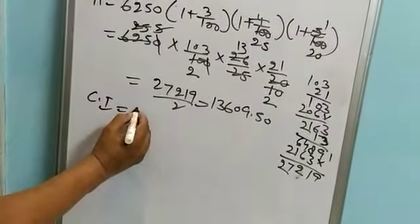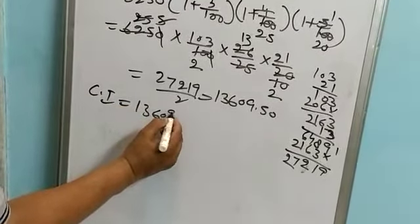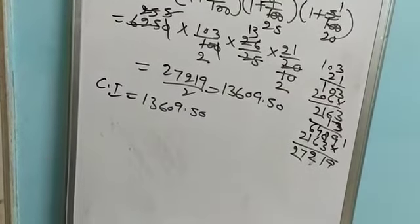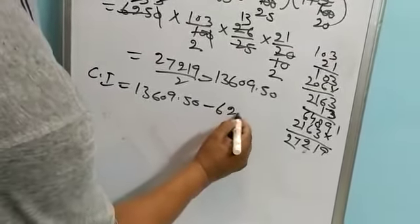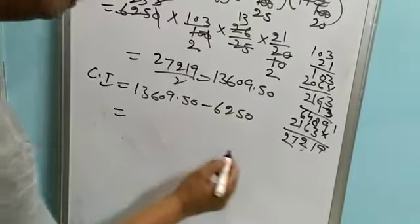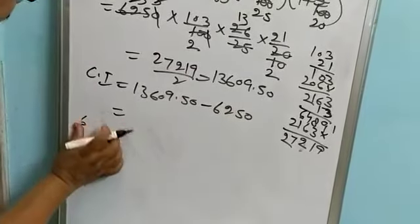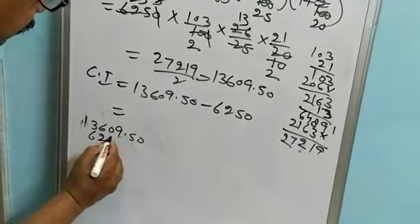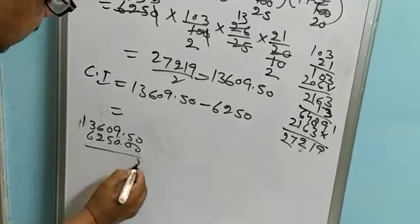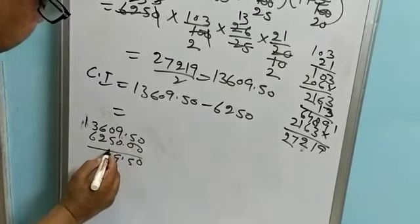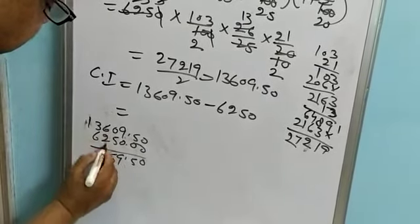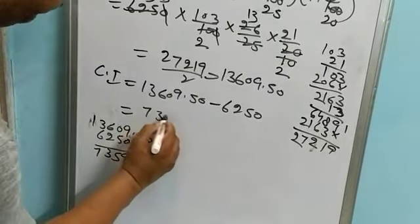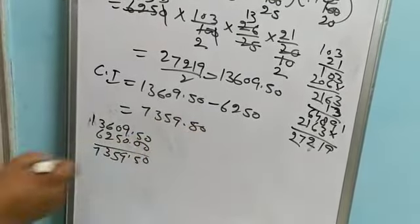Computing the compound interest: 136,095 minus 62,50 equals 13,609.50. Reading the final answer: 13,609.50. That is Rs. 13,609.50, okay?